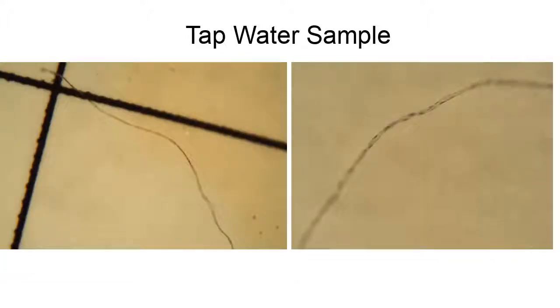Here are two pieces of microplastic that we found in our tap water sample. So far we have found fewer pieces of microplastic in the tap water, but it is still concerning that we are finding microplastic in the tap water.